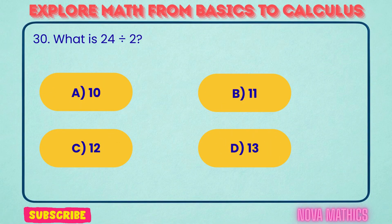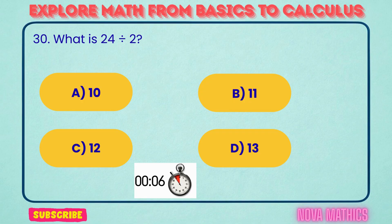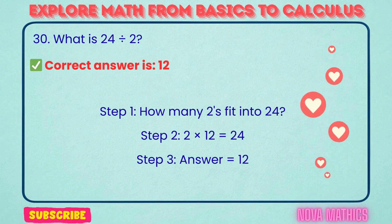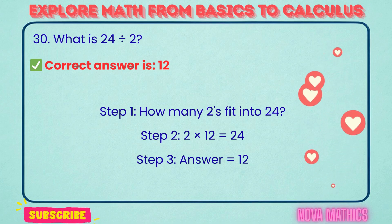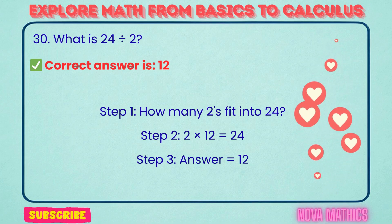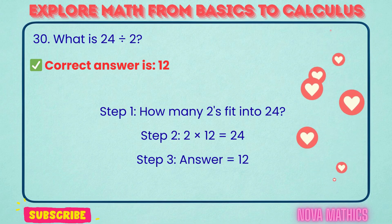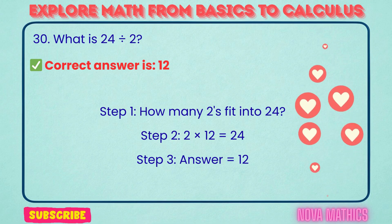30. What is 24 divided by 2? Correct answer is 12. 24 divided by 2 equals 12. We find this because 2 times 12 is 24.